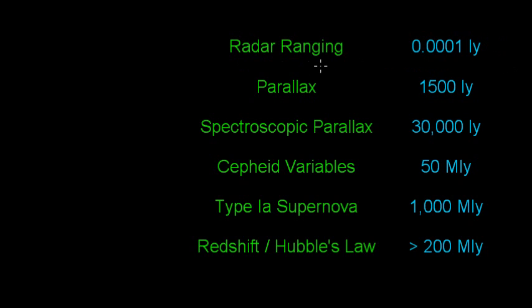So we started with radar ranging and looking at the parallax of nearby stars, all the way building up to looking at supernovae, some of the brightest objects that can be seen over a billion light years away, and ultimately getting up to using redshift to measure the distances to the farthest galaxies that we can actually see.